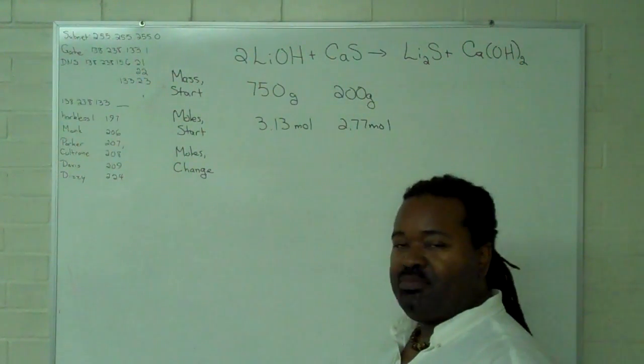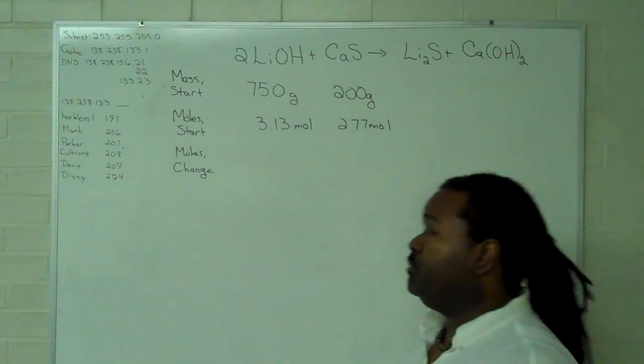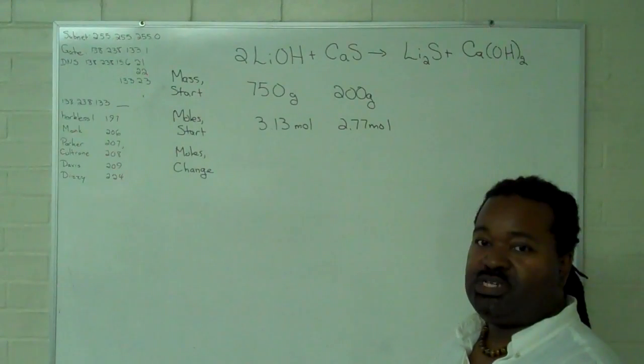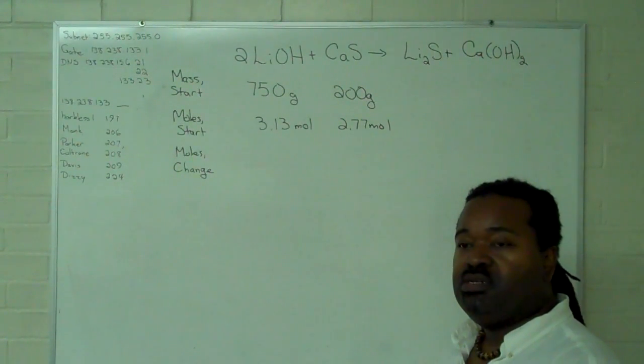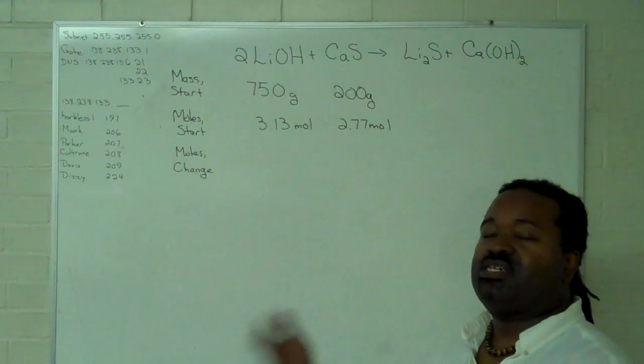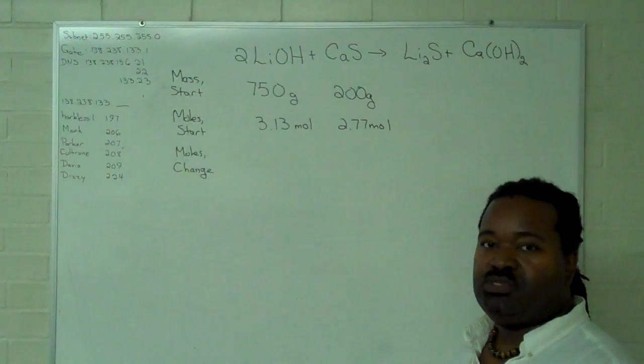The next step in a limiting reagent problem is determining which of these quantities represents the number of moles that will get used up completely. And in doing so, we can then determine the number of moles of the excess reagent that will be used.